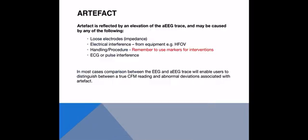Artefacts are false readings that may cause elevations in the CFM trace. They can be caused by impedance issues like loose electrodes, electrical interference from equipment (such as a baby on high-frequency oscillation ventilation), handling or procedures — which is why it's important to use markers on the CFM trace during handling or procedures — and ECG or pulse interference. Comparing the AEEG with the raw EEG helps determine whether abnormal deviations are true or artefactual.